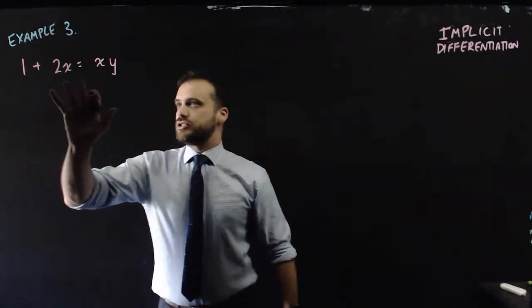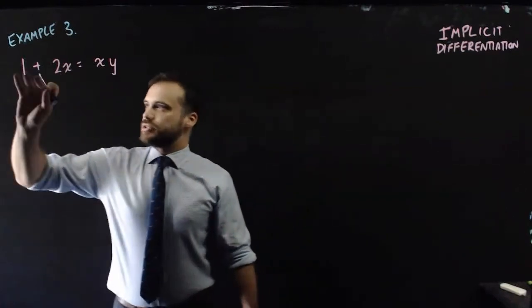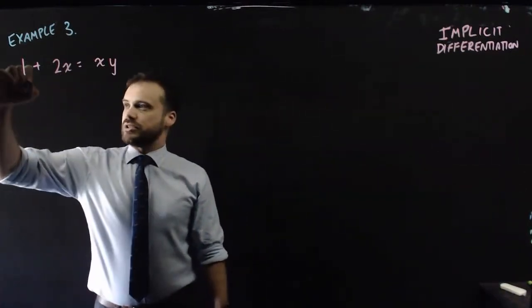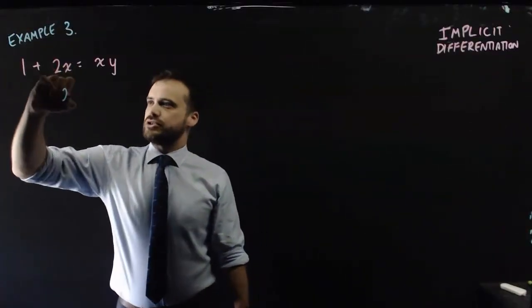So next example here, and I'm upping the ante a little bit. 1 plus 2x equals xy. It's this term that's going to cause us trouble. The derivative of 1 is constant. So the derivative of 1 is 0. Gone. The derivative of 2x, that simple, is just 2.